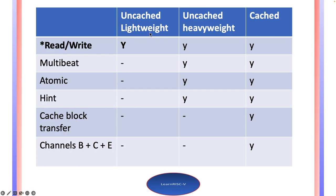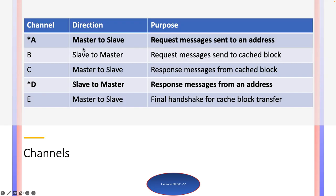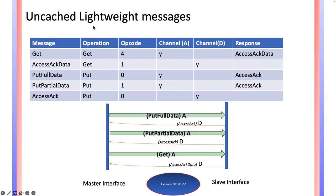In the Uncached Lightweight, the only operations supported are read and write, like get and put operations from memory. In TileLink Uncached, these are all the messages supported in this TL-UL conformance level. There are a total of five messages: get is like getting the value from memory, and put full data and put partial data are the write operations.